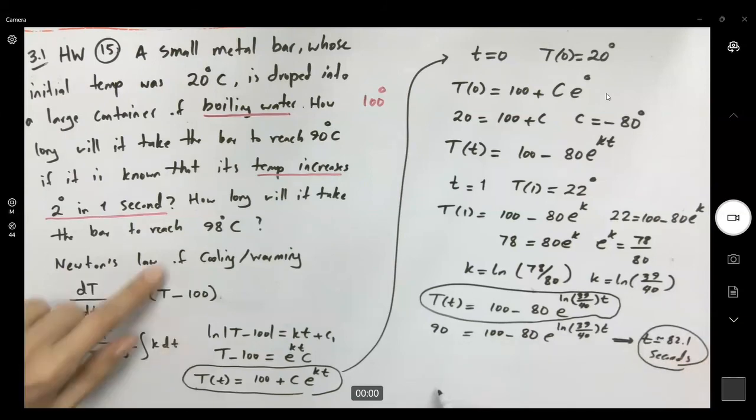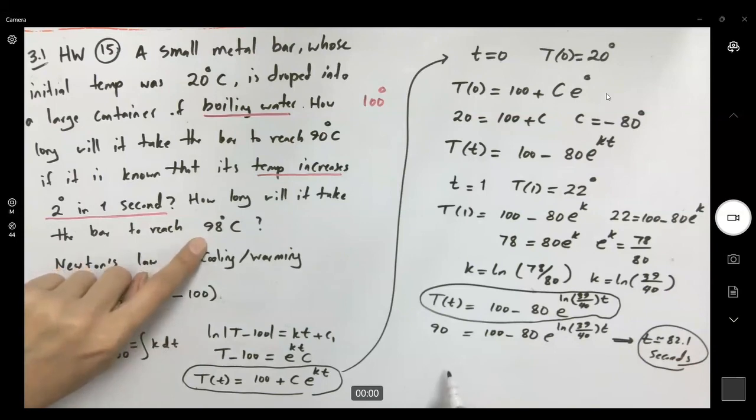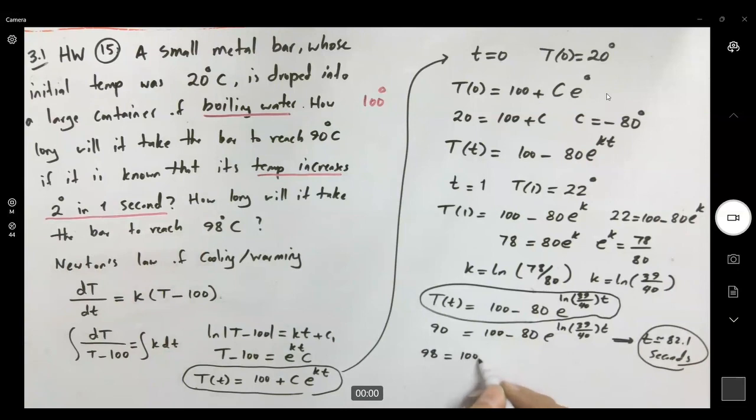To find how long it will take to reach 98 degrees, 98 degrees is 100 minus 80 e to ln of 39 over 40 times t. And if you do the calculation, t becomes approximately 145.7 seconds.